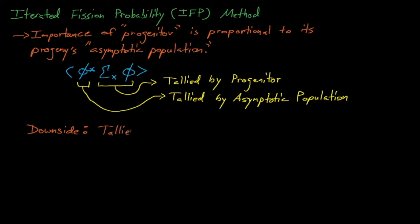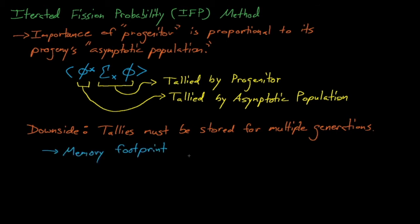The downside to the Iterated Fission Probability method is that we want to store the progenitor's reaction rate tallies for the latent generations until we reach its asymptotic generation. The number of latent generations necessary is usually between 5 and 10, but the MCMP code assumes 20 latent generations, which is a fairly conservative number. The memory footprint for the progenitor tallies can reach as much as 1 megabyte per progenitor particle, and this memory footprint can quickly become unwieldy if you're simulating many thousands of particles per generation.